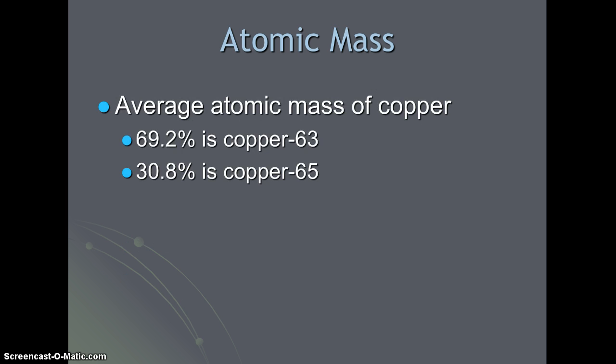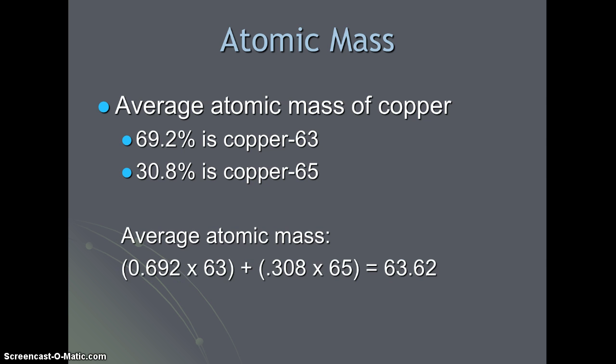So how do scientists calculate the average atomic mass? We have the numbers for copper-63 and copper-65. You take the percent abundance and change it into a decimal form and multiply it by the mass of the isotope for each of the isotopes that exist. You add those components together, which gives us the average atomic mass on the periodic table. So for copper, we take 69.2 percent and multiply it by 63, and then 30.8 percent times copper-65. Adding these two together, we get 63.62.